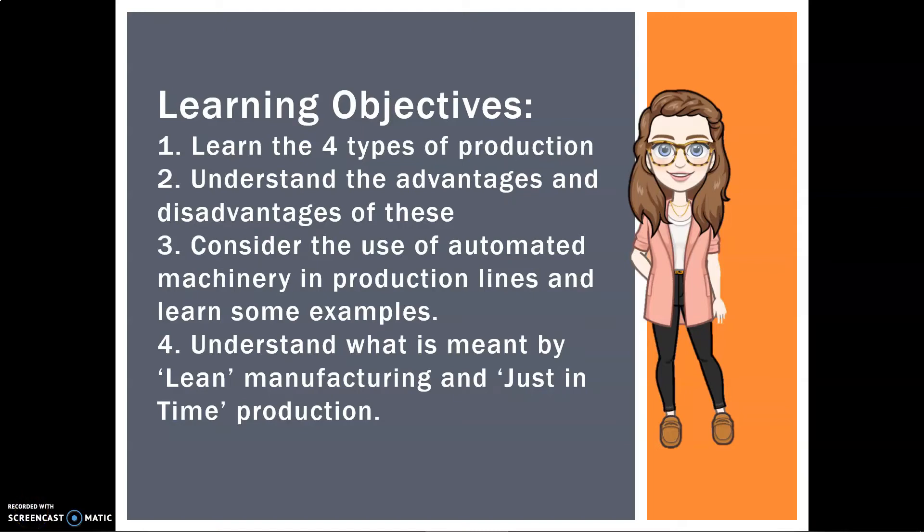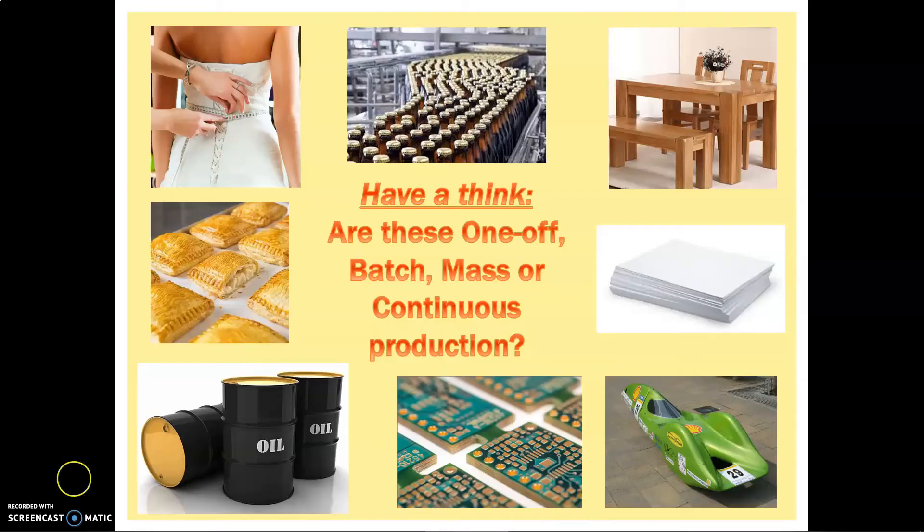Hi guys, it's Miss Edden. Today we are going to learn the four types of production, understand the advantages and disadvantages of these, consider the use of automated machinery in production lines, and understand what's meant by lean manufacturing and just-in-time production.